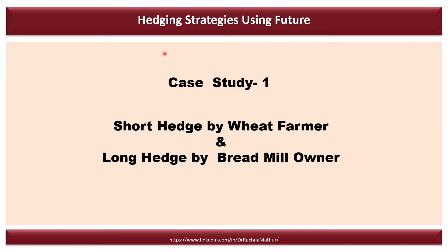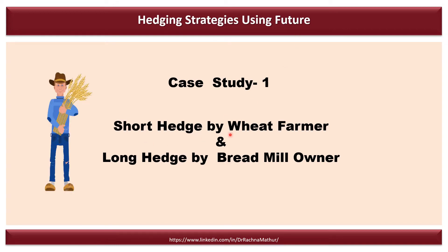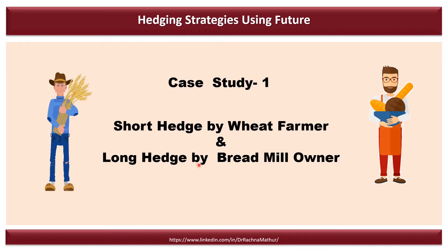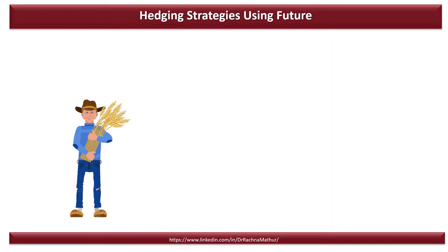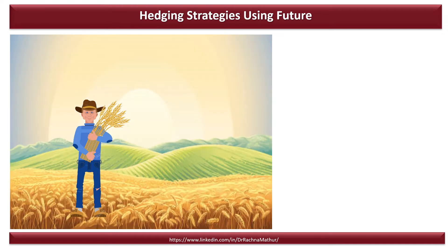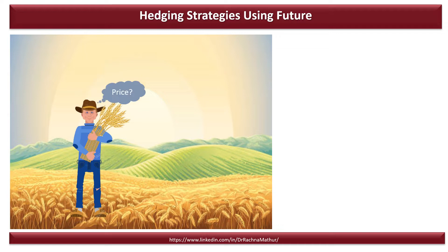The first case study to explain hedging strategies using futures is a short hedge by a wheat farmer and a long hedge by a bread mill owner. This is Mr. John. He is a wheat farmer. He is working day and night on his wheat field to produce a bumper crop — a healthy and good harvest. But at the same time, Mr. John is concerned about the market for his wheat when the harvesting time comes in. He is concerned about the price: at what price would he sell the wheat? What would be the market situation at the time of wheat harvest? And if the market is not assured, he is also concerned with the storage cost.